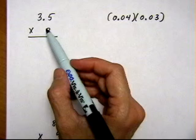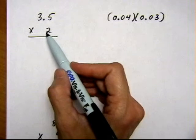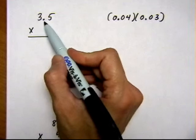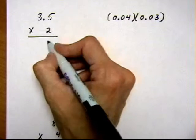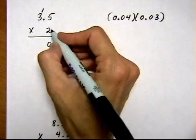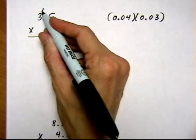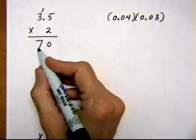So the first thing you want to do is just ignore the decimal and do out the multiplication. So if I have 3.5 times 2, I'm going to do 2 times 5 is 10, carry the 1. 2 times 3 is 6, plus 1 is 7. So I have 70.